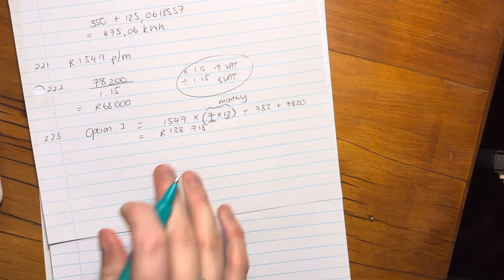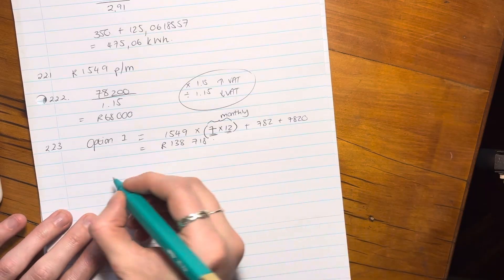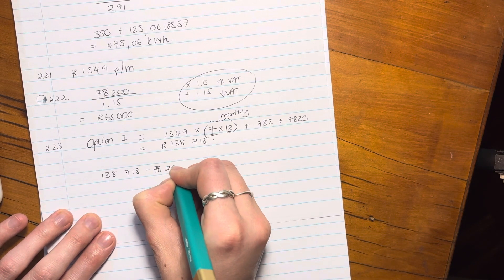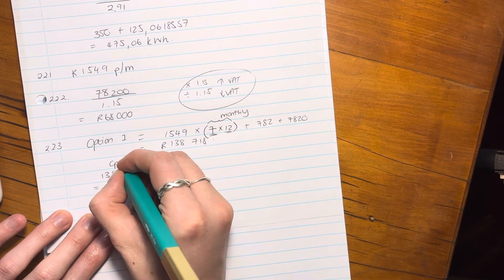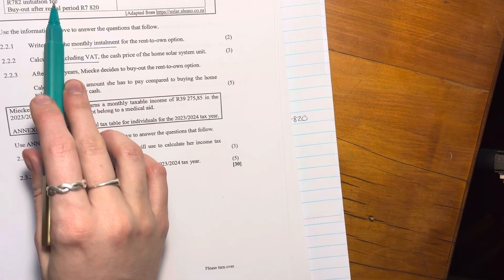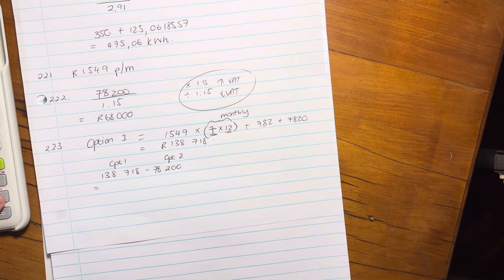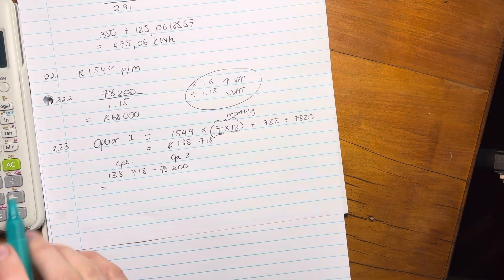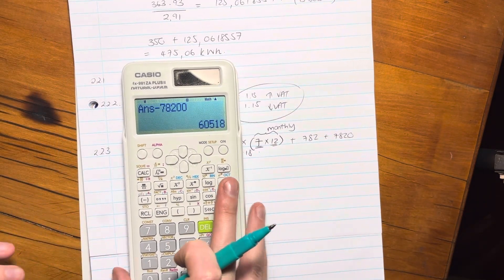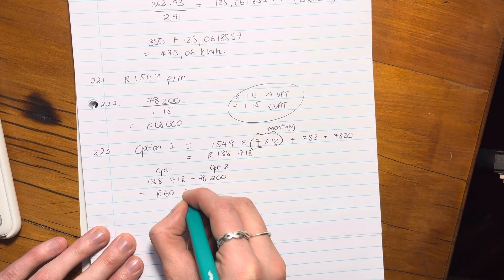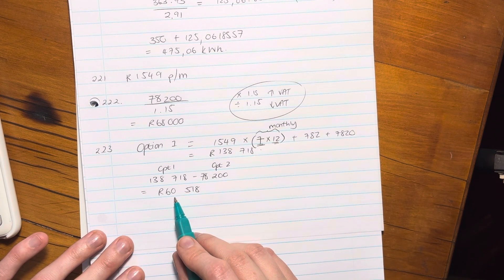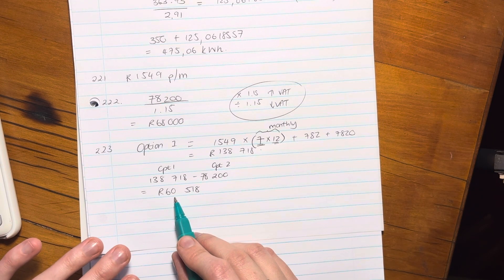We're not done. We have to compare that now to the R78,200. So we say R138,718 subtract off R78,200. That's basically option one minus option two, because the question asked us how much extra would she pay for this option compared to that option. So we're just going to pop that now into our calculator. And my answer is R60,518. So basically by opting for option one, she's going to pay R60,518 more Rand than in option two.